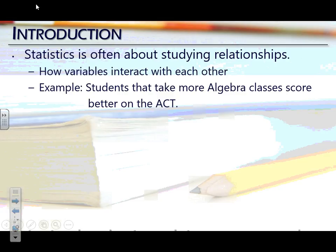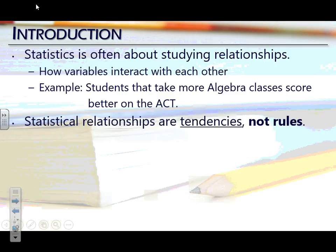An important aspect to keep in mind: when we talk about relationships, when we say there's an association between two variables, these are tendencies — they are not rules. So when we say people who take more algebra classes tend to score better on the ACT, that does not mean there aren't some kids who don't take that many algebra classes but still do well, or a kid who has taken every math class and still doesn't score well. They're patterns, they're trends, not necessarily rules.